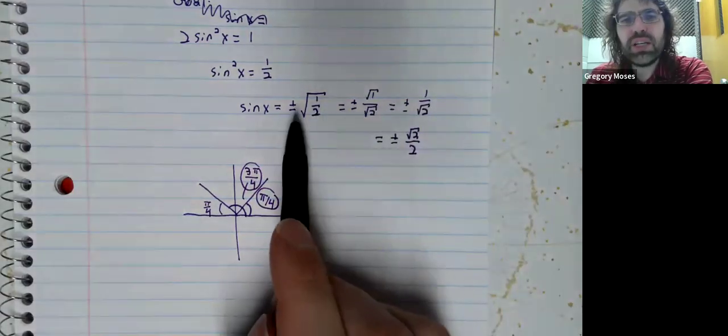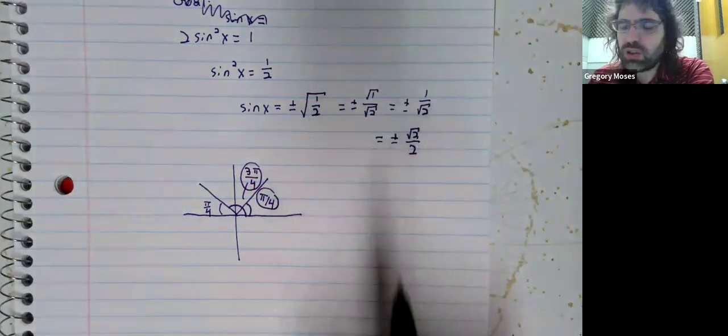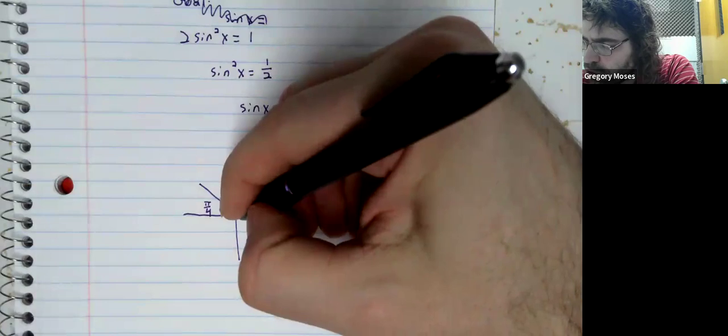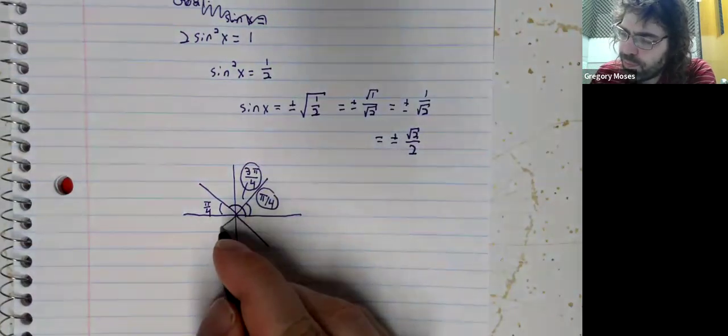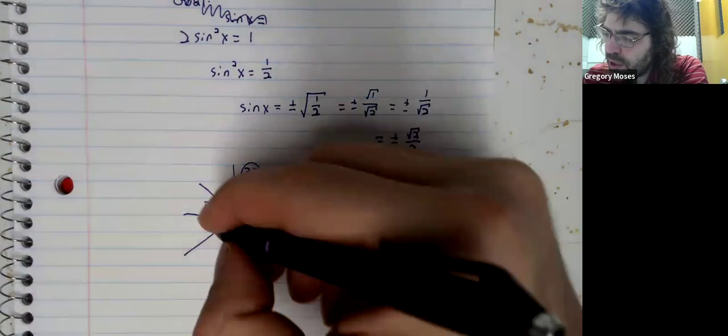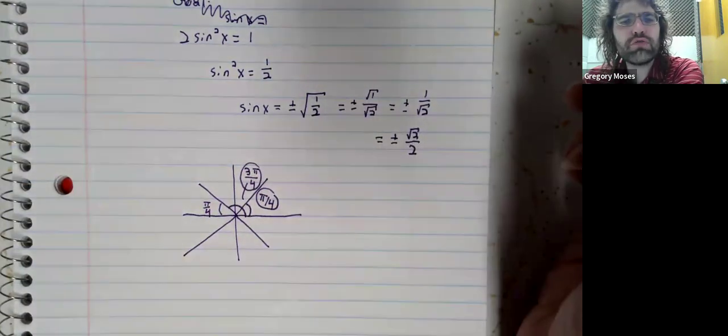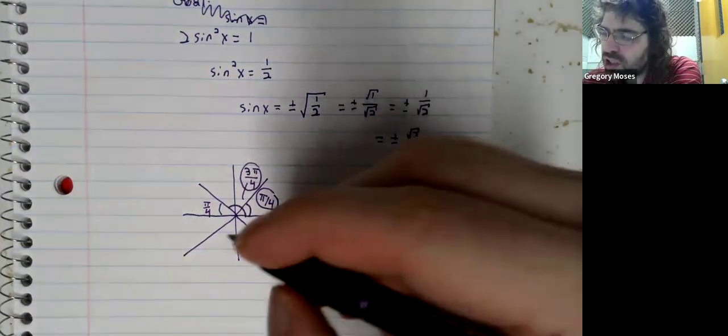And then it's going to be the negative square root of 2 over 2. Again, I'm using reference angles here.